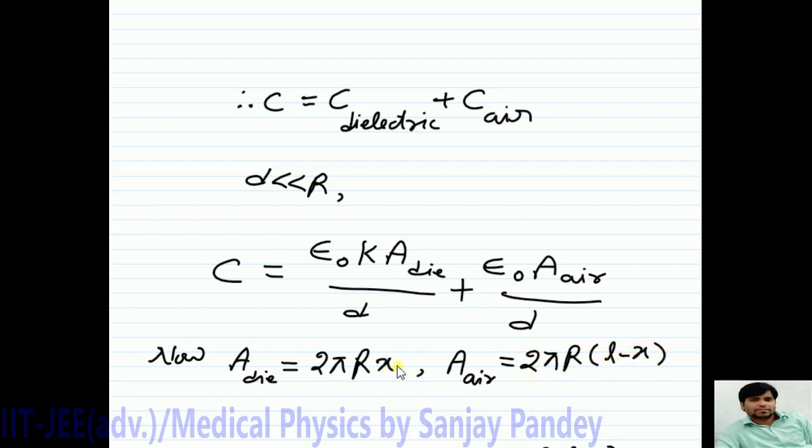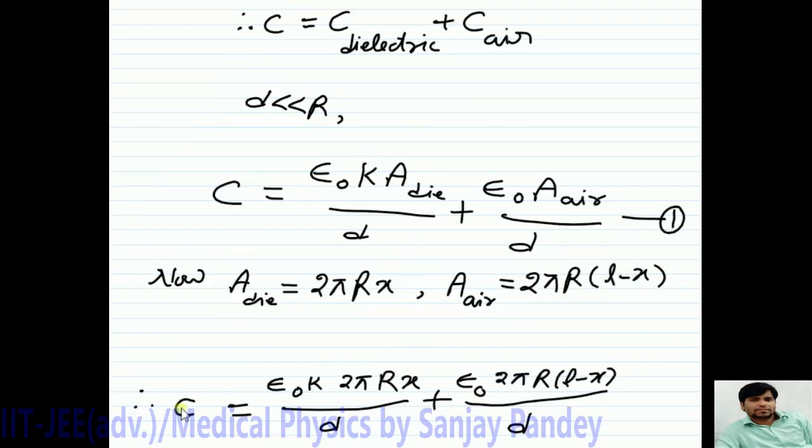Now, substituting these values in this equation, we get C equals epsilon naught K 2 pi R X upon D plus epsilon naught 2 pi R L minus X upon D.